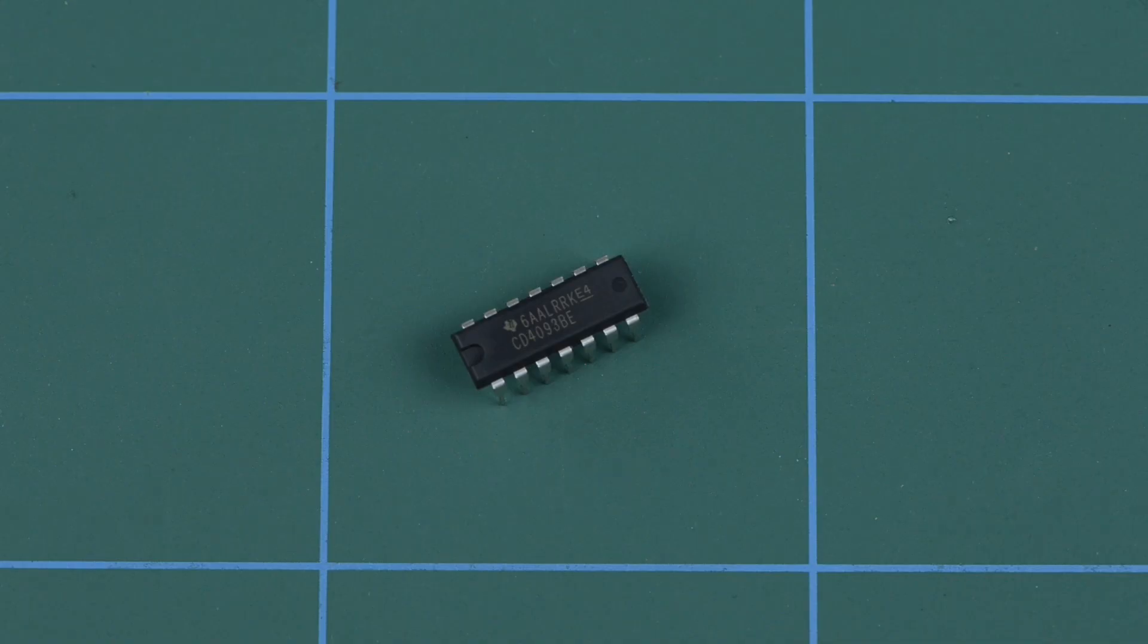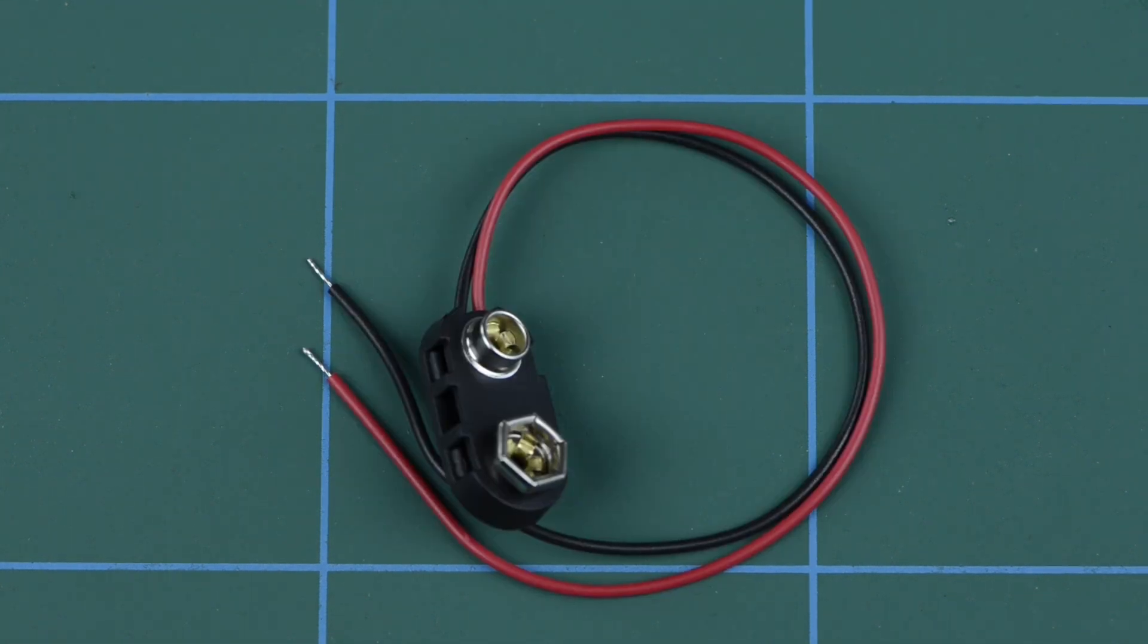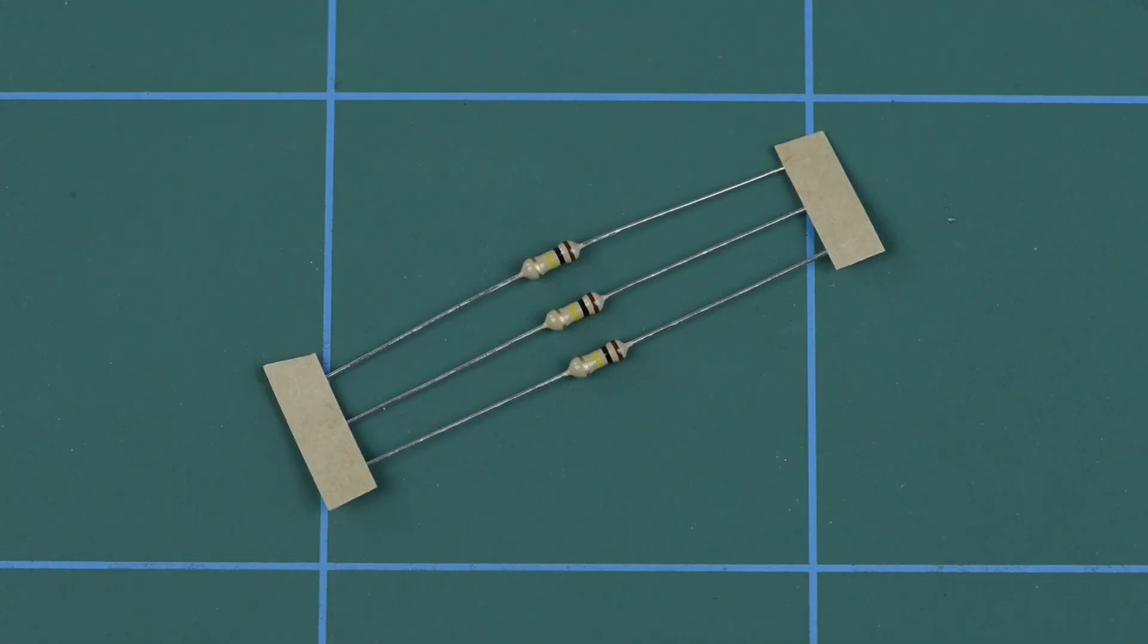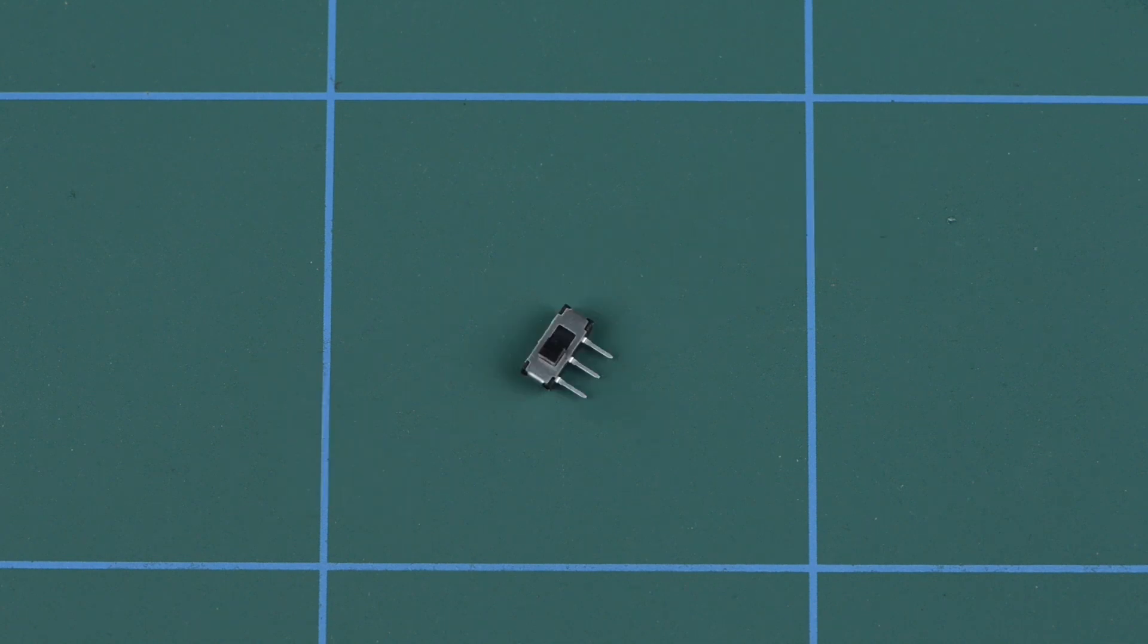In this kit you'll find a 4093 logic IC, a 14-pin DIL socket, a PP3 battery clip with tinned flyleads, a piezo sounder, three 100k carbon film resistors, an ultra miniature slide switch, and two 15nF capacitors.